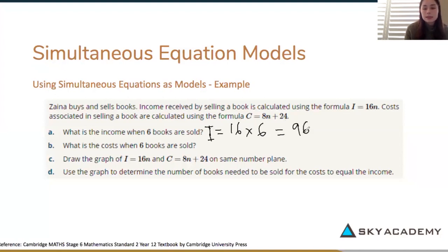Question b, what is the cost when six books are sold? So we're going to go to cost, which is 8 times 6 plus 24 and when you do that you should get the answer 72. So in a and b we're just using the formulas of cost and income to figure out what it would cost or what the income would be when six books are sold.